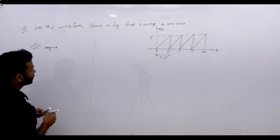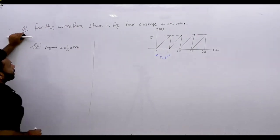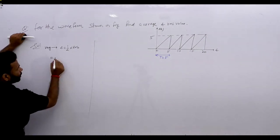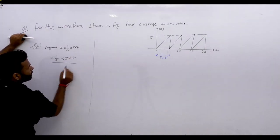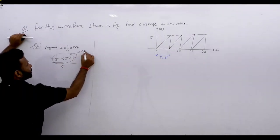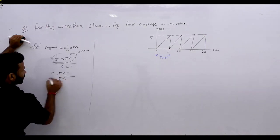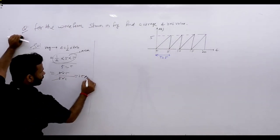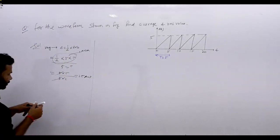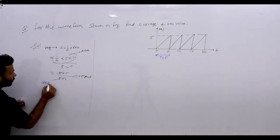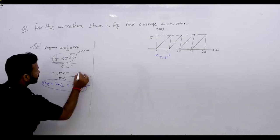For the average using the area method for a triangular waveform: area is (1/2) × length × base = (1/2) × 5 × 5, divided by time period 5. So it is (5 × 5) / (5 × 2) = 2.5 ampere. Also using the trick for triangular waveform average: Vm/2 = 5/2 = 2.5. Both methods give the same answer.